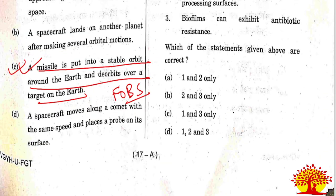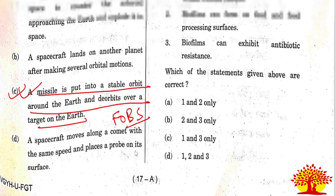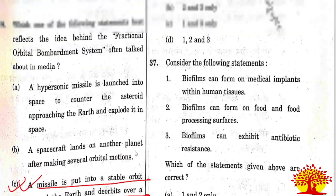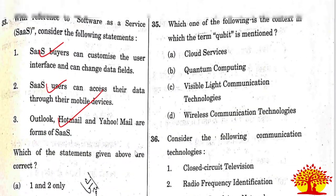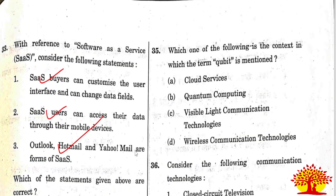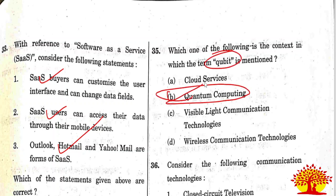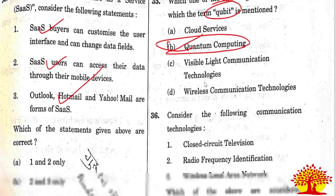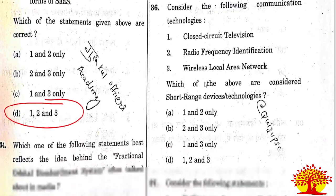Thirty-fifth question: Qubit is mentioned in what context? Qubit is mentioned in the context of quantum computing. Option B is the right answer.